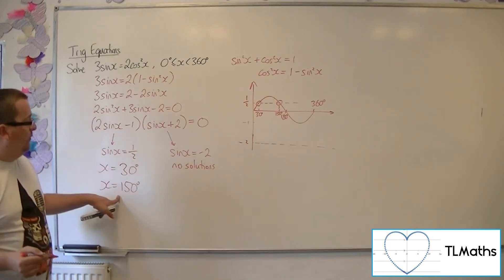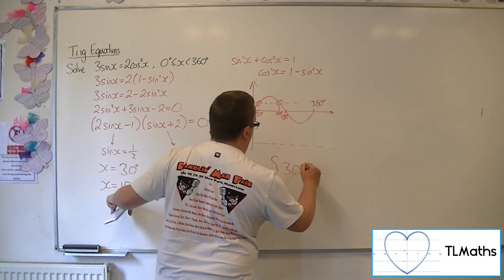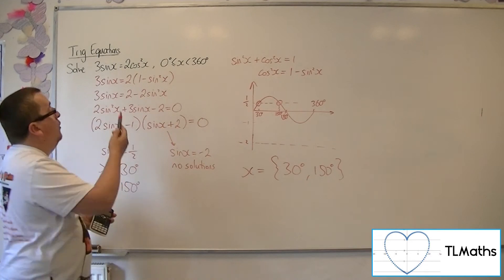And so x equals 30 and x equals 150 are the only two solutions to the original problem.